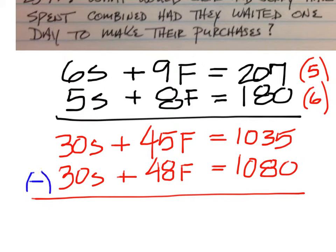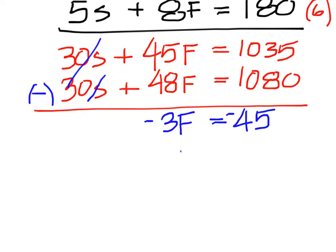We can subtract to cancel these out. 45 minus 48 would be negative 3F, and then 1035 minus 1080 would be negative 45. So we have to divide by negative three to get a positive 15 for the flower pot.